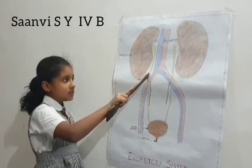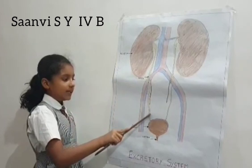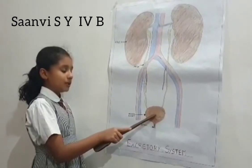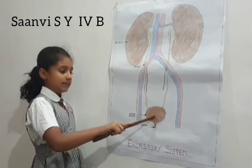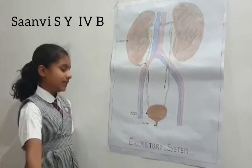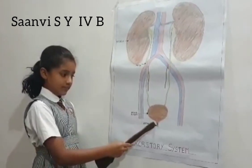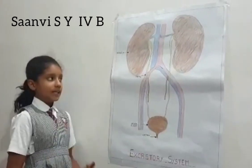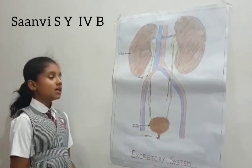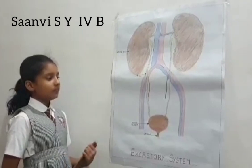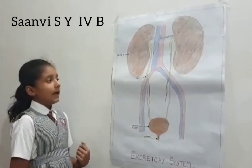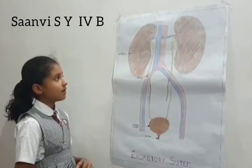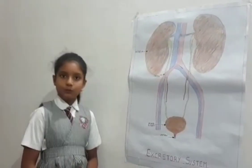The urine is stored in the urinary bladder. This stored urine is released from our body through the urethra. This is how the excretory system works in our body and it helps to remove the waste from our body. Thank you.